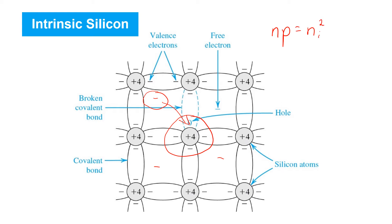The geometric mean of the electron and hole concentrations equals the value of NI, which we said was 1.5 times 10 to the 10 per centimetre cubed at room temperature for silicon. So considering the example just described, in steady state the final free electron concentration would be somewhat higher than NI, and the hole concentration would be lower than NI, and the geometric mean would be equal to NI.